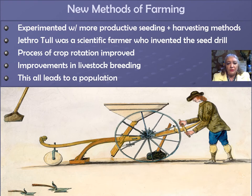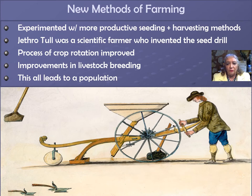Another method was crop rotation. This was an improvement upon an older method called the medieval three-field system. In one year a farmer might plant a field with wheat, which exhausted the soil nutrients, and the next year he planted a root crop such as turnips to restore the nutrients. This was followed by barley and then clover. Another new method was animal husbandry. Robert Bakewell increased his sheep meat output by allowing only his best sheep to breed, and the average weight of lambs climbed from 18 pounds to 50 pounds.